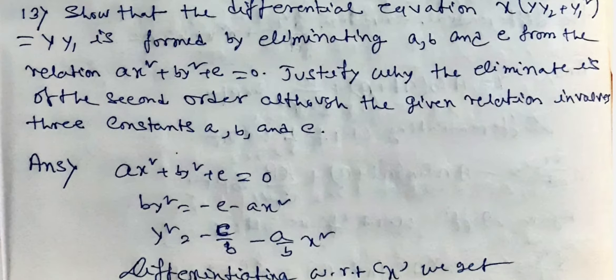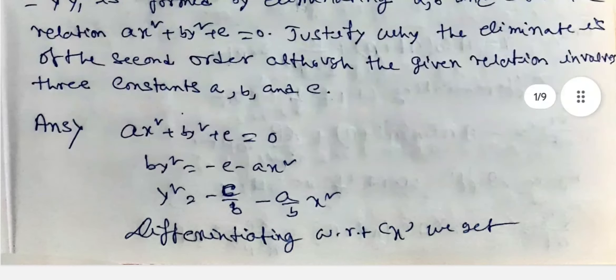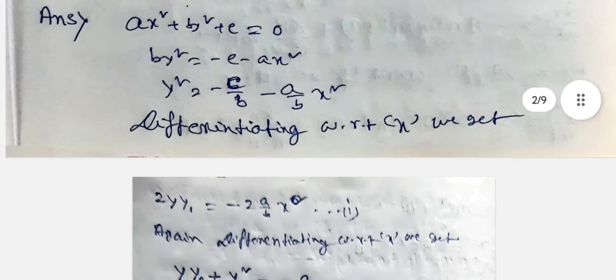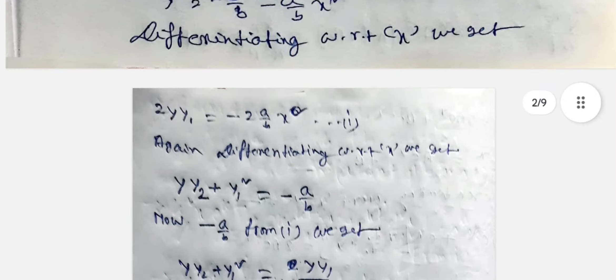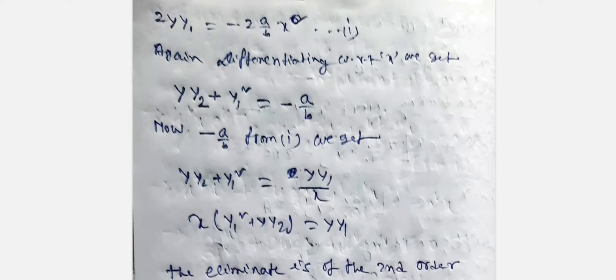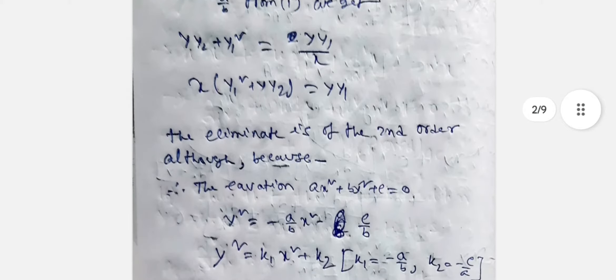Given equation: AX² + BY² + C = 0. Dividing by B: Y² = (C/B) - (A/B)X². Differentiating with respect to X we get 2Y·Y1 = -2(A/B)X. Since C/B is constant, its derivative equals 0. Again differentiating with respect to X we get Y·Y2 + Y1² = -(A/B). Now substituting -(A/B) from equation 1 we get Y·Y2 + Y1² = Y·Y1/X.